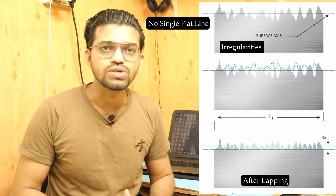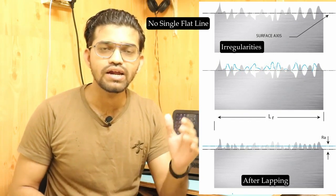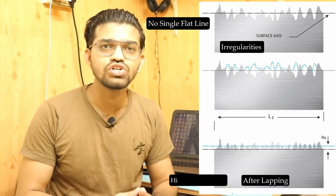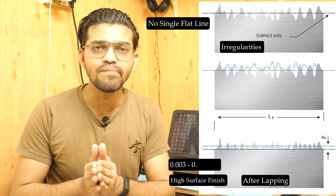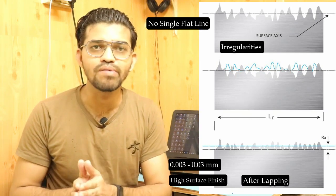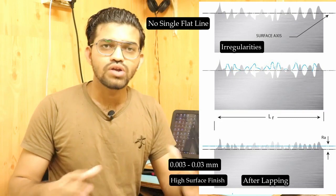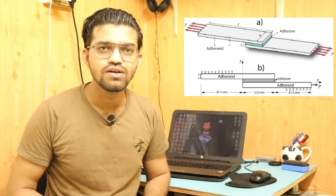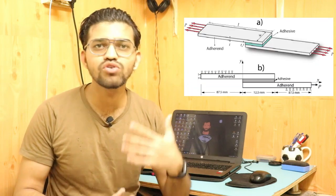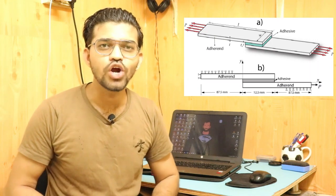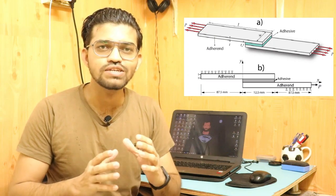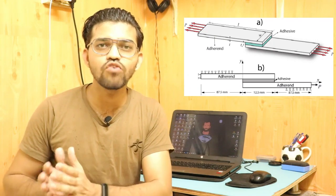In the lapping process, these irregularities are removed and a surface finish of 0.003 mm or 0.03 mm is achieved. Now let's understand what exactly the lapping process is. The name itself says lapping — you must have heard about the lap joint. A lap joint consists of two plates overlapping one another, and the lapping process is very similar to that.